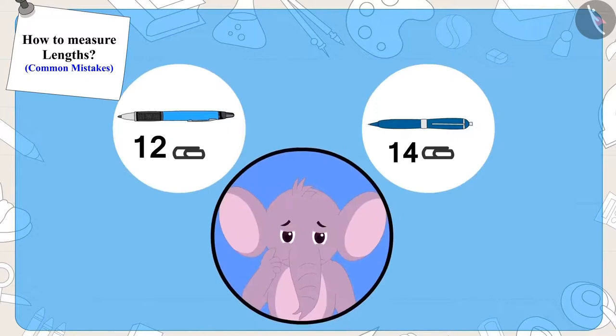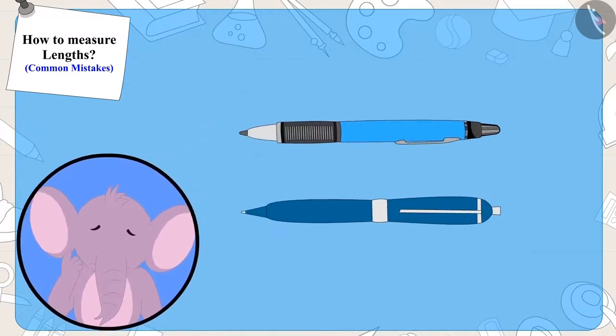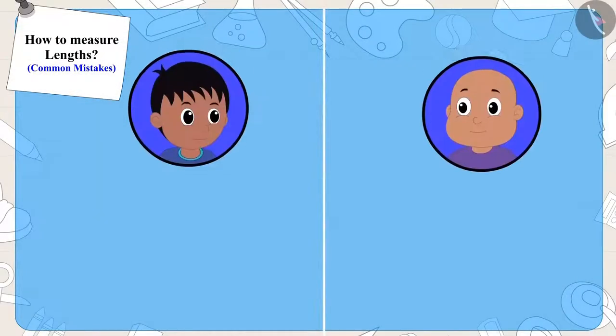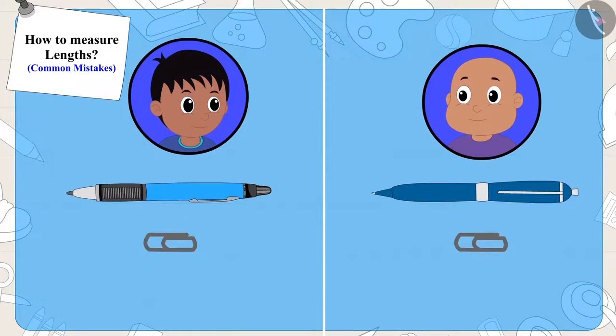Appu again felt something was wrong here. He placed both their pens alongside each other and saw that both pens were of the same length. Can you say this time out of the two who made the mistake and what was the mistake?